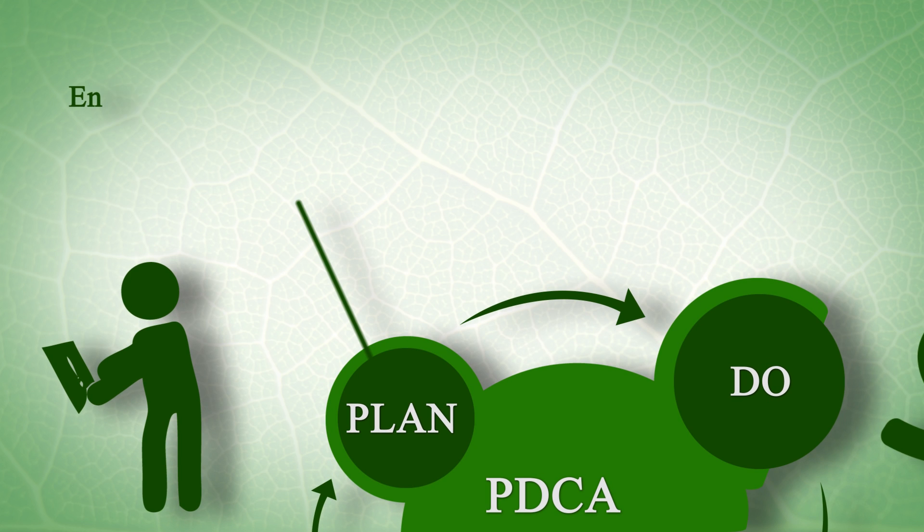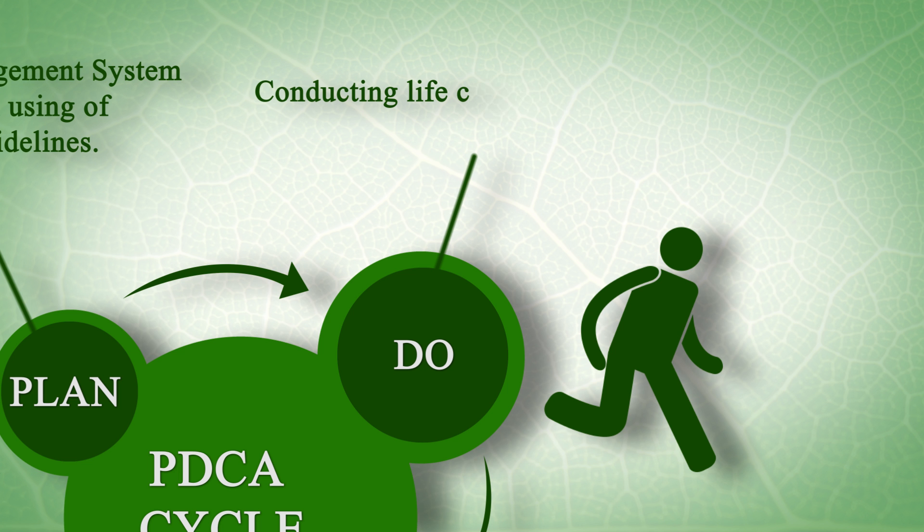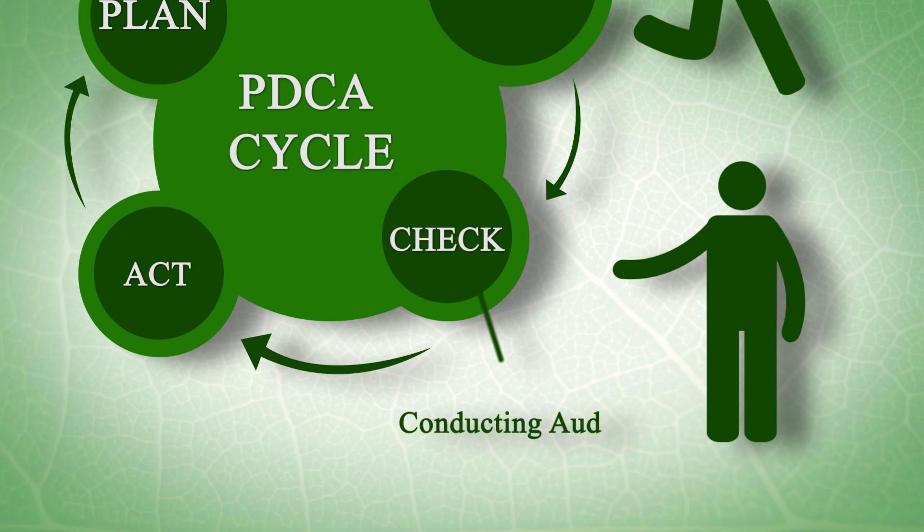Plan: Environmental Management System Implementation Using ISO 14000 Guidelines. Do: Conducting Life Cycle Assessment and Managing Environmental Aspects. Check: Conducting Audits and Evaluating Environmental Performance. Act: Using and Maintaining the Environmental Management System Through Continuous Improvement.